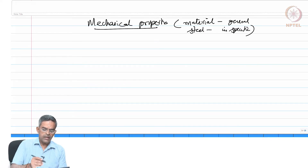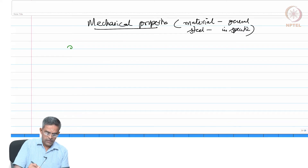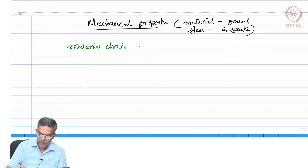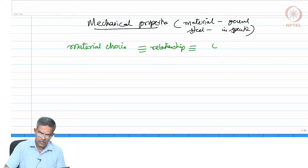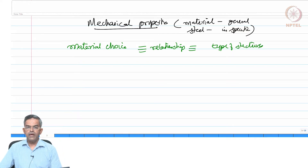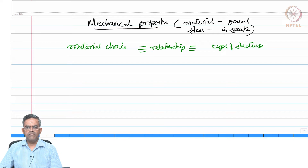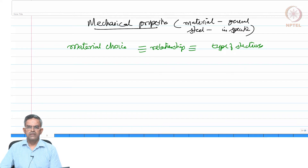Let us pay attention to the mechanical properties of material in general and steel in specific. We must agree that material choice has a very strong one-to-one correspondence with the type of structure. You cannot apply a common material to all types of structures because the functional requirements of various structures are different.